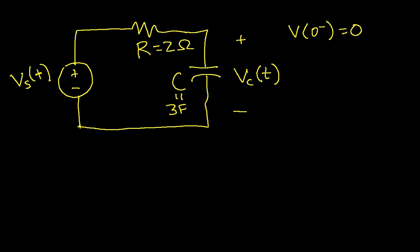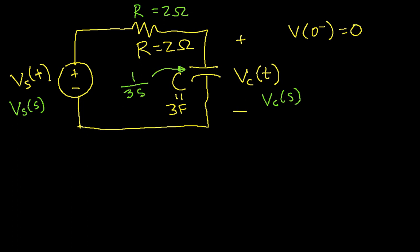The first step is to solve this circuit in the Laplace transform domain: convert capacitances and inductances into impedances and change sources and voltages into their Laplace-domain versions. So the source voltage becomes Vs(S), Vc becomes Vc(S), R stays as 2 ohms, and the impedance of the capacitor becomes 1/(3S). Because I've assumed the initial voltage is zero, I don't need any additional voltage source in the circuit.